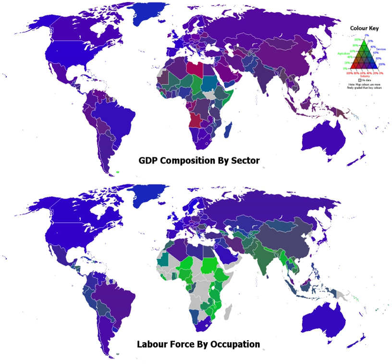Historically, certain manufacturing industries have gone into decline due to various economic factors, including the development of replacement technology or the loss of competitive advantage. An example of the former is the decline in carriage manufacturing when the automobile was mass-produced. A recent trend has been the migration of prosperous, industrialized nations towards a post-industrial society, manifested by an increase in the service sector at the expense of manufacturing, and the development of an information-based economy — the so-called informational revolution.